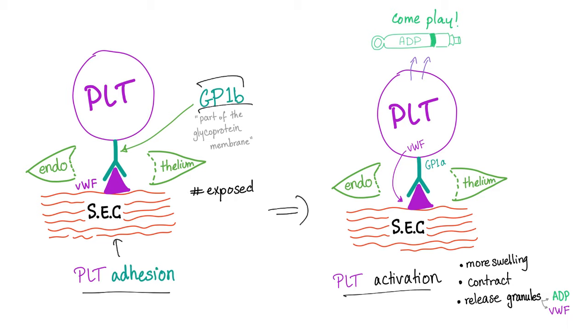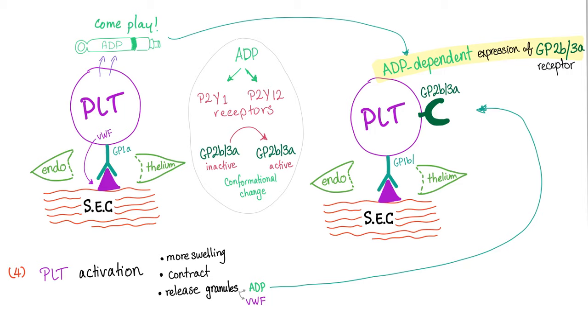Then platelet activation occurs. Platelets get active, they go crazy, and they secrete the ADP, the great whistleblower. And ADP will whistle to other platelets, as I've told you before. ADP starts whistling to other platelets.